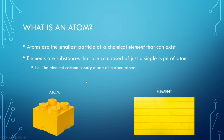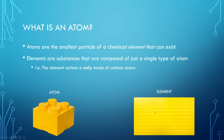An atom is defined as the smallest particle of a chemical element, and a chemical element is basically a substance composed of just a single type of atom. For example, if you build a big yellow Lego wall simply using yellow Lego block units, this represents an element and the single block represents a single atom. You could have green blocks or blue blocks, and a blue wall made from just blue blocks would be a different element. So the element carbon is only made of carbon atoms, and the element oxygen would only be made of oxygen atoms.